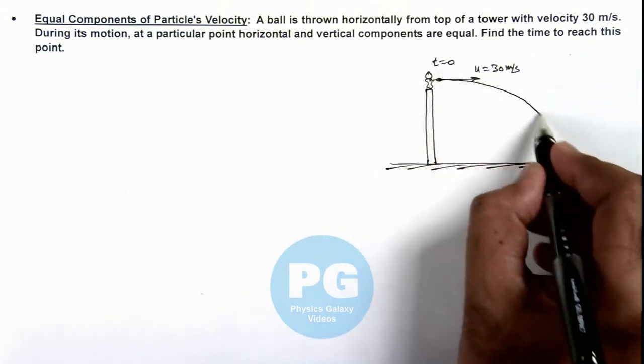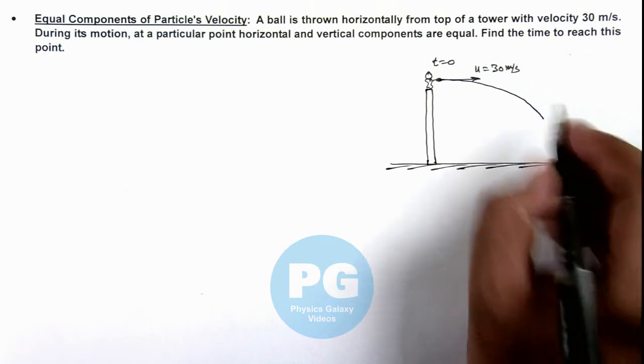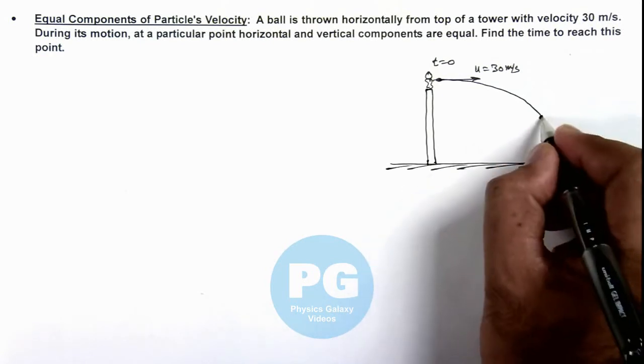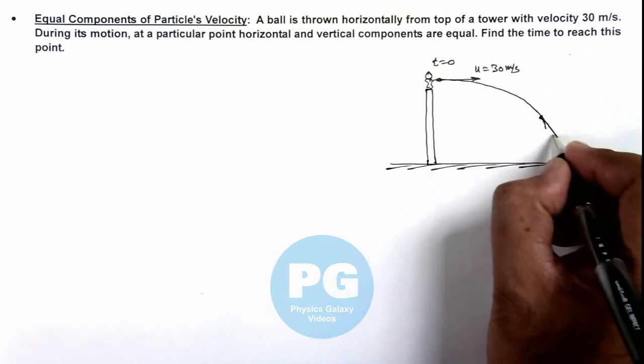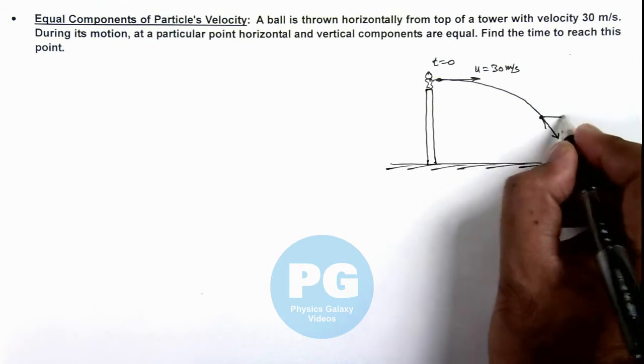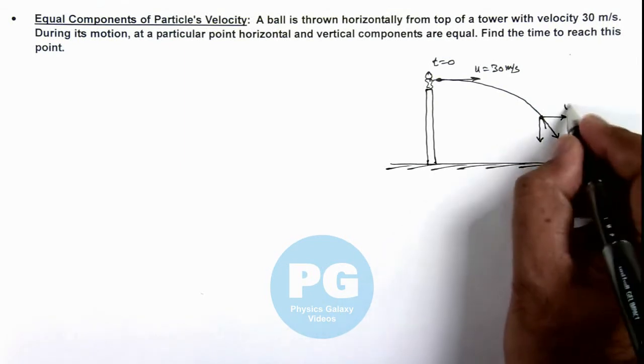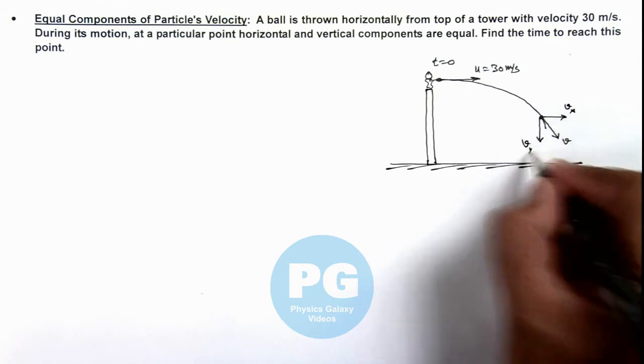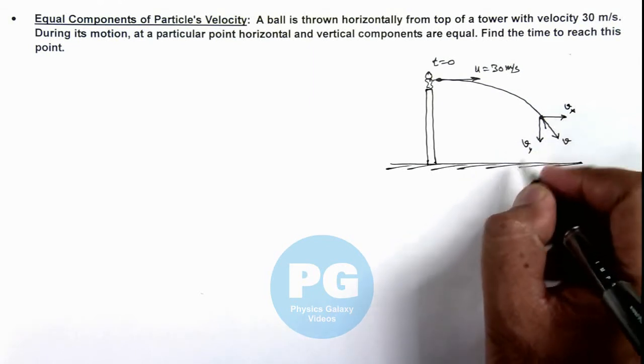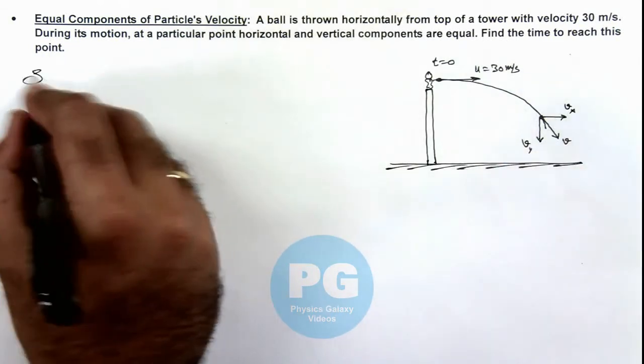It follows a horizontally thrown projectile, and at any instant of time its velocity is along the tangent. It has one horizontal component and another is vertical component. This is the x direction velocity, this is y direction velocity.